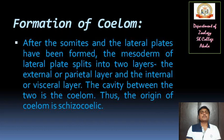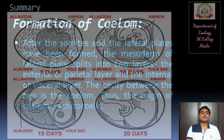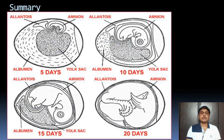Now, formation of the coelom. After the somites and lateral plates have been formed, the mesoderm of the lateral plates splits into two layers: the external or parietal layer and the internal or visceral layer. The cavity between the two is the coelom. Thus the origin of the coelom is schizocoelic.